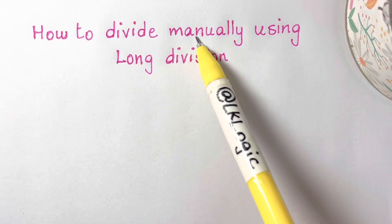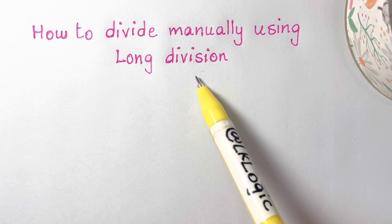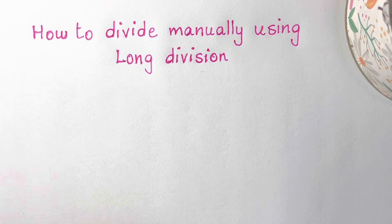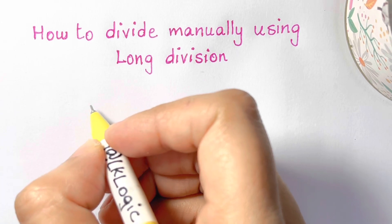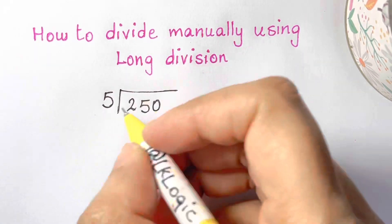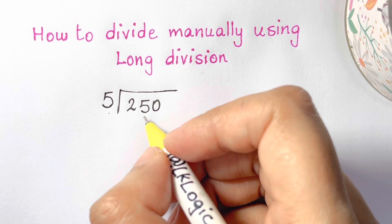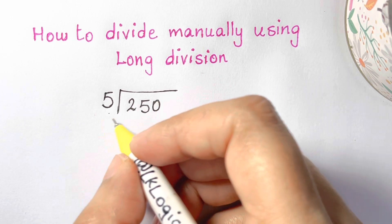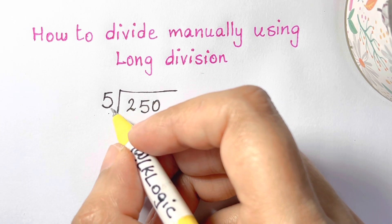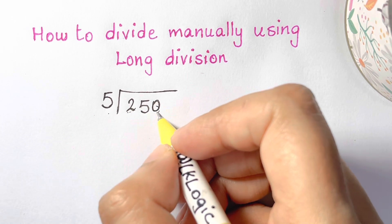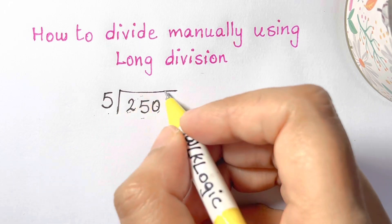How to divide manually using long division? Let's look at the number. Say we are dividing 5 into 250. We always set it up with the smaller number that we are dividing on the outside, and the bigger number that we are dividing is inside with these lines.